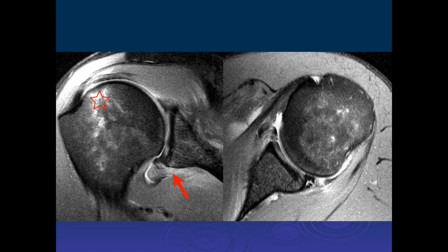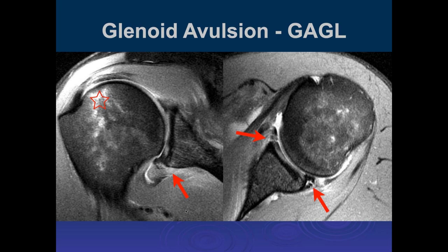On the axial image we can definitely see there's a tear in the inferior labrum both anteriorly and posteriorly. However, what we see on the MRI does not tell us whether it's unstable or not.